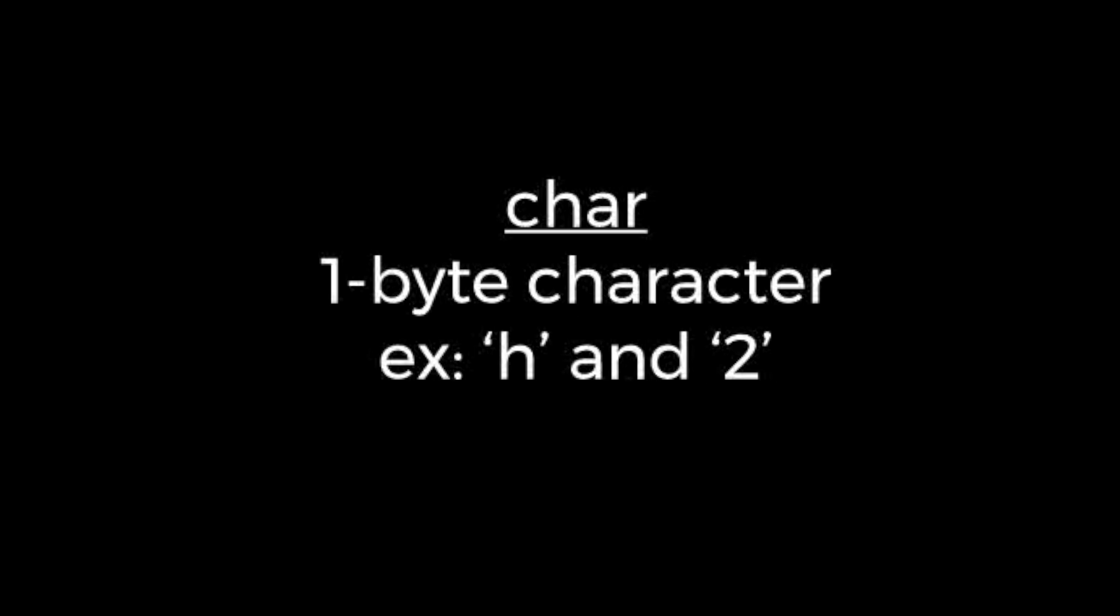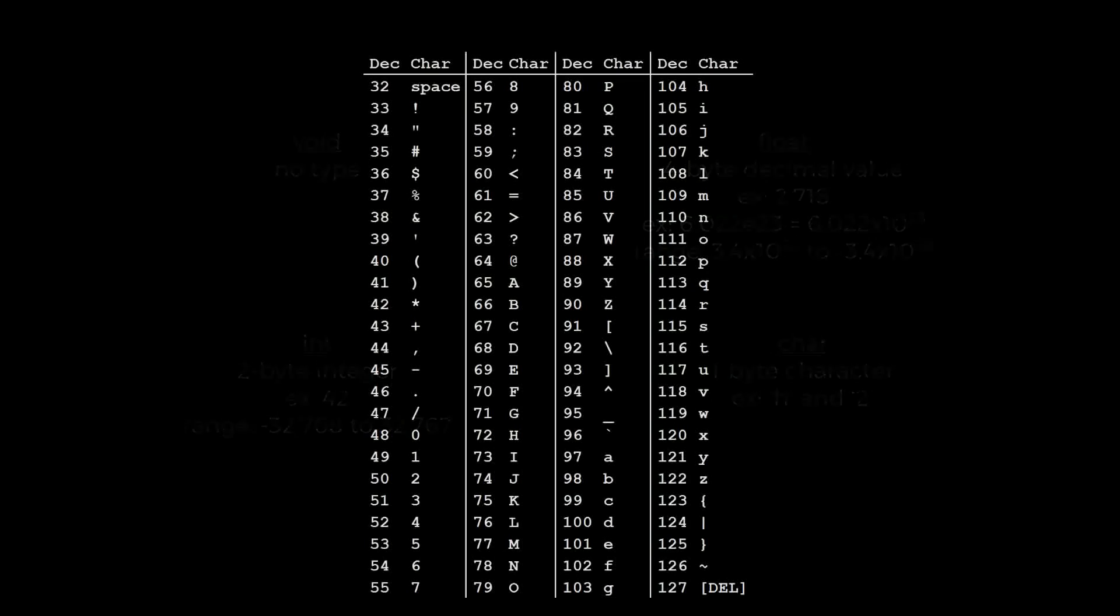Because it's only one byte, there can only be 256 possible characters, and Arduino uses the American Standard Code for Information Interchange, otherwise known as ASCII. ASCII was created in the 1960s and used on teletype machines. Here is a table showing how the characters are stored in ASCII format. For example, the number 117 corresponds to lowercase u, and 46 is a period.